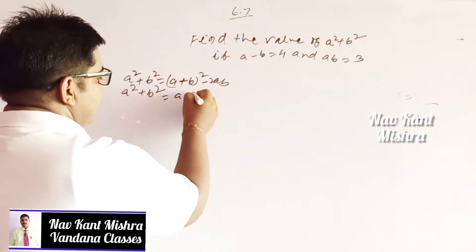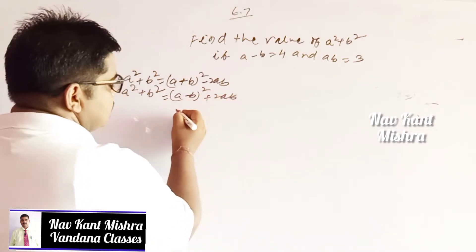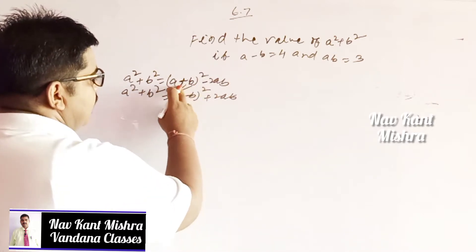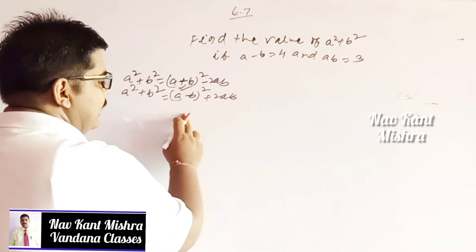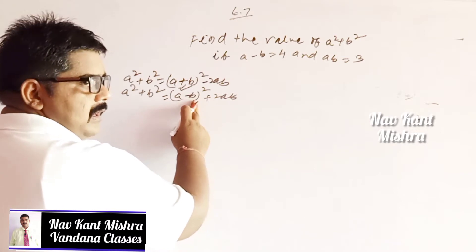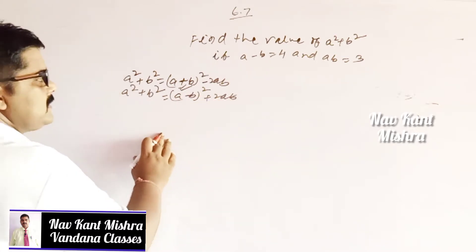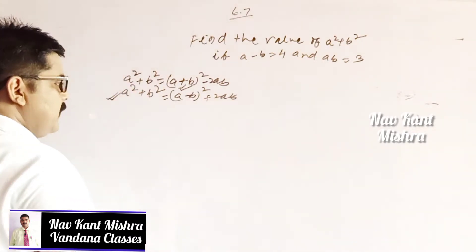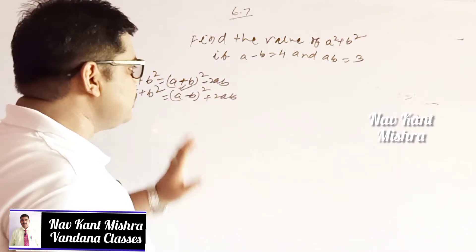The second type of question uses the formula: a square plus b square is equal to a minus b whole square plus 2ab. In the first type, the values of a plus b and ab are given. In the second type, the values of a minus b and ab are given. This question is based on the second formula because the value of a minus b and ab has been given.